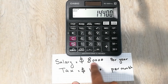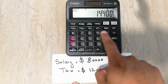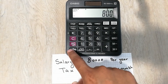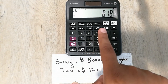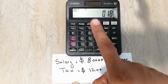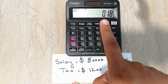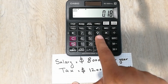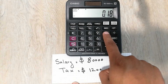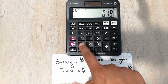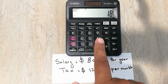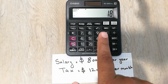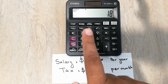In the next step, we divide fourteen thousand four hundred by eighty thousand. The answer is point one eight. Because it comes as a decimal, we multiply point one eight with one hundred, and our answer is eighteen. So eighteen percent is the tax rate that you are paying.